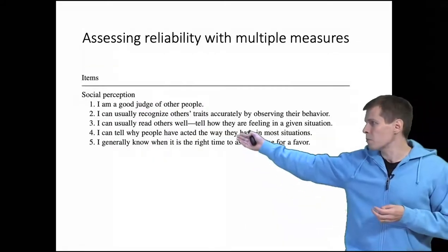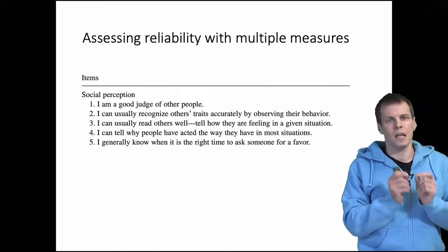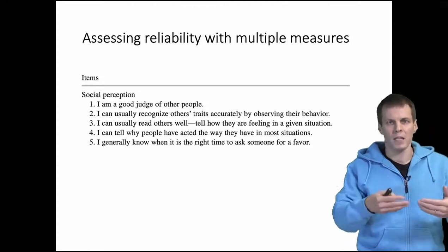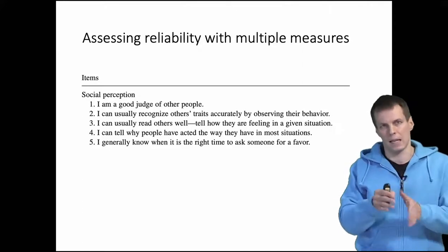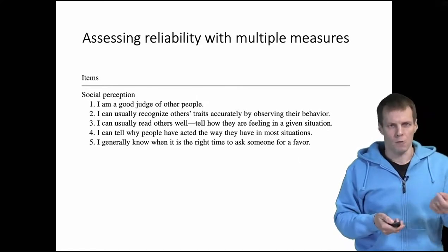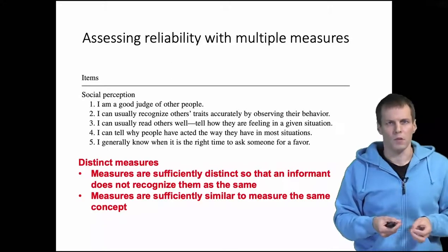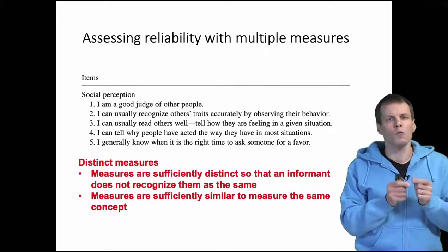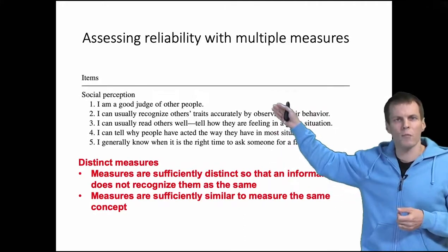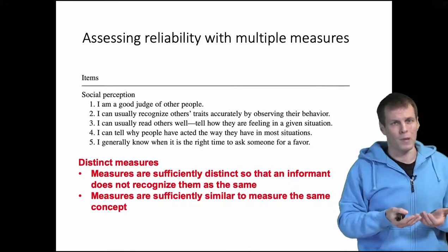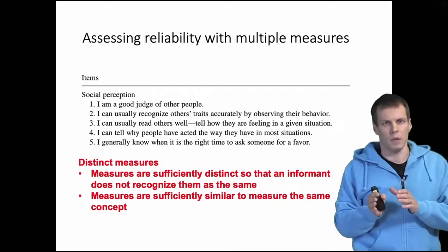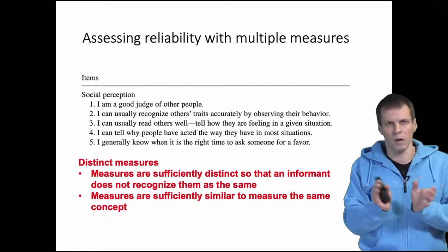If we want to measure a person's social perception, then we can't simply ask the same question again and again, because a person will remember what they answered the previous time and then they will just repeat what they answered. So it doesn't work. People don't reset as easily as bathroom scales do. In practice, we often use multiple different questions that are called distinct measures. So we have five different questions that are all supposed to measure the same thing, but they are sufficiently distinct so that the person doesn't really recognize that these are actually asking about the same thing. And this is a fine balance on how different and how similar the items can be.